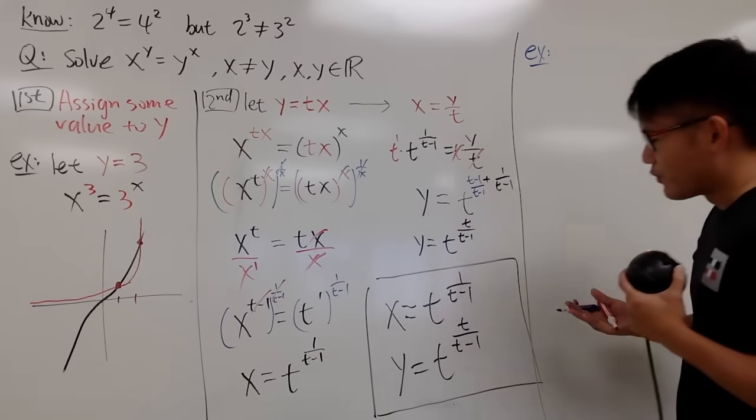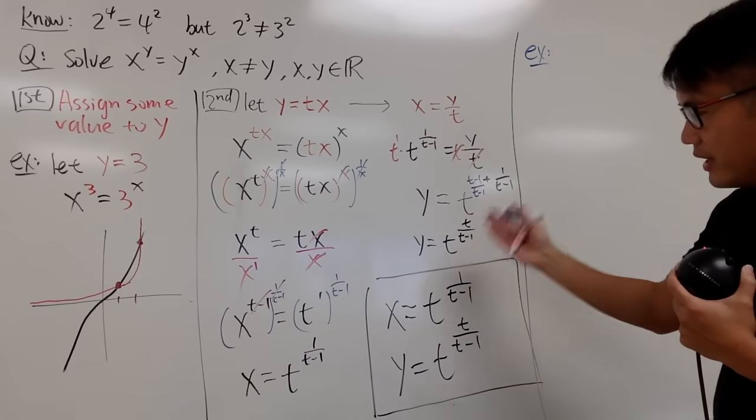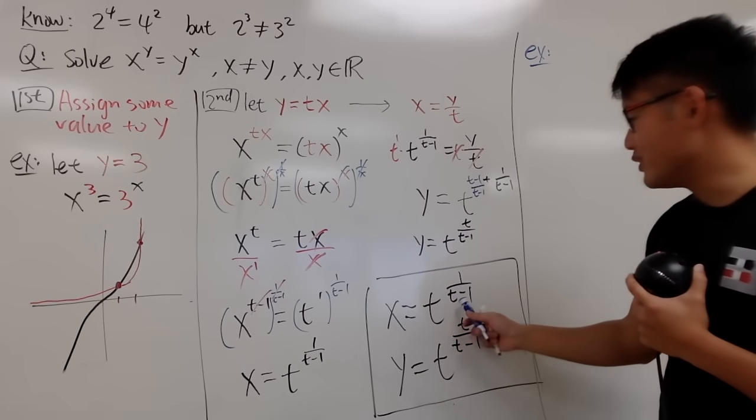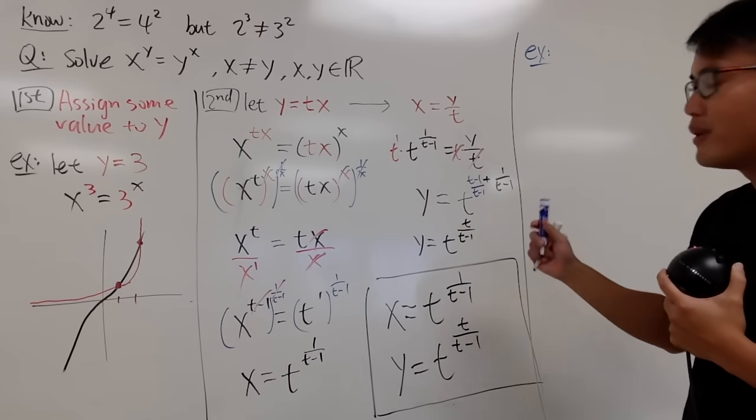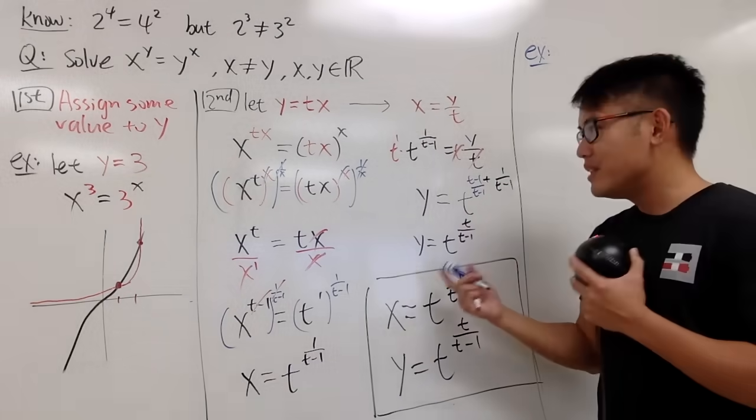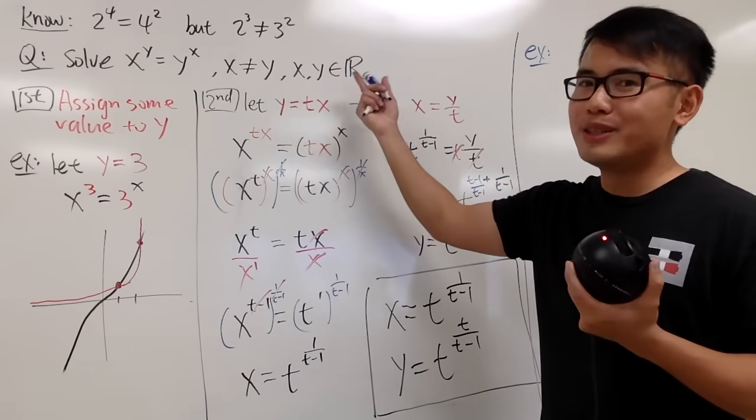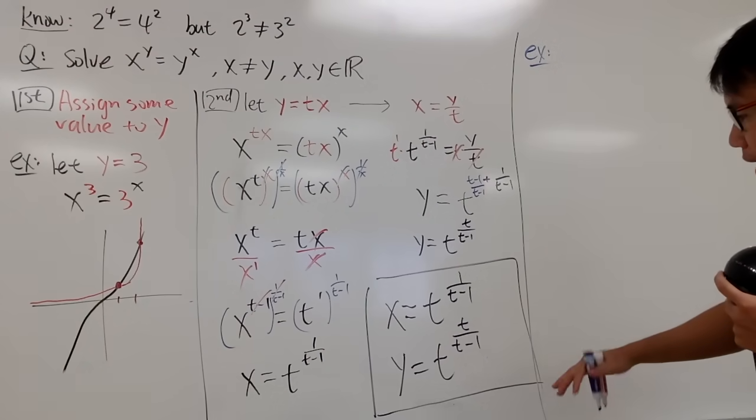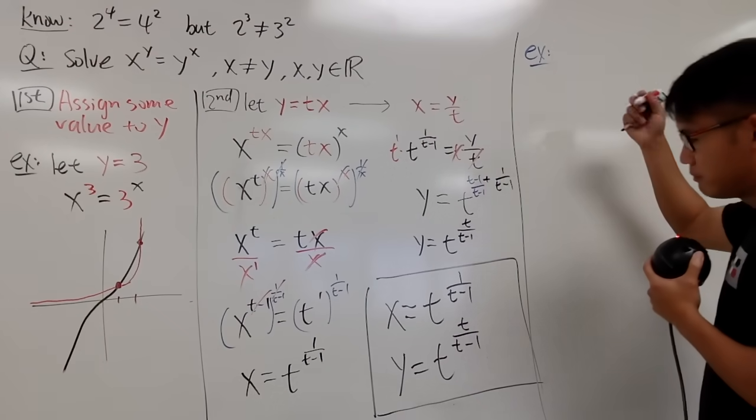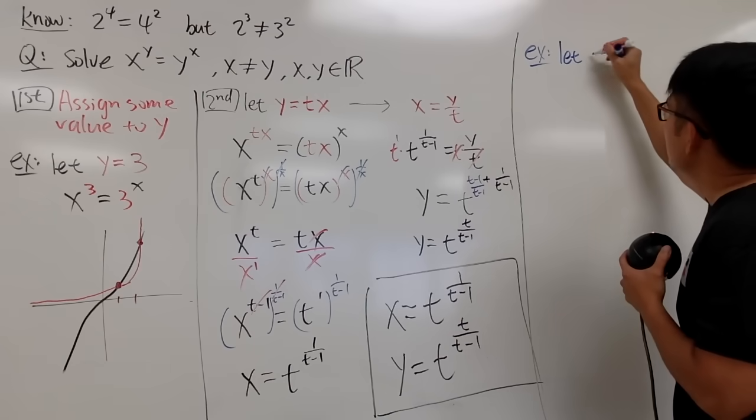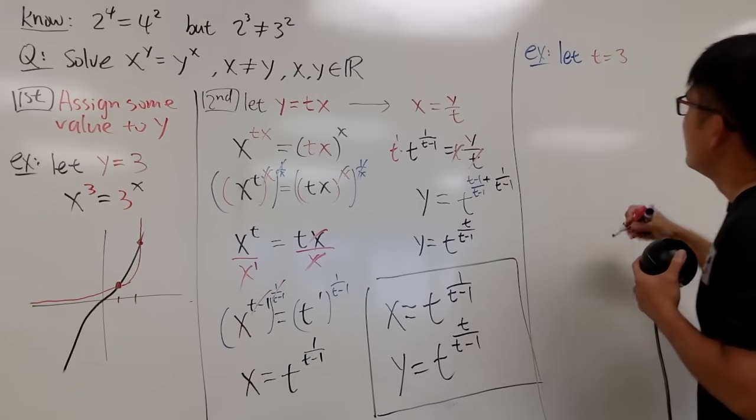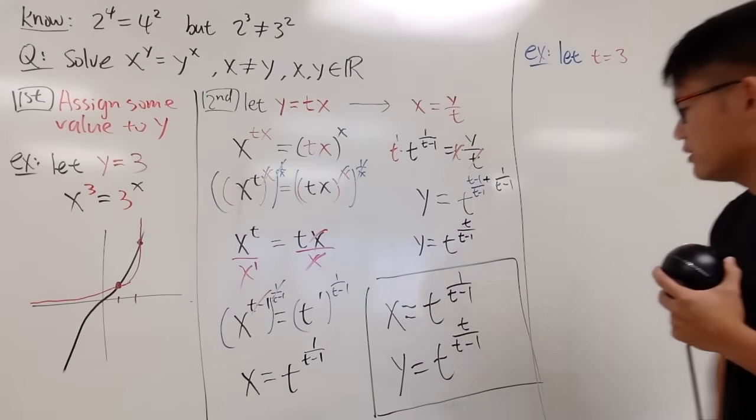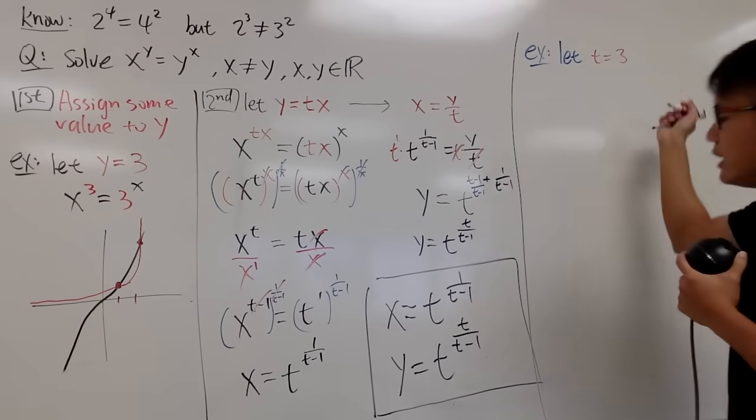But for now, let me just work out an example for you guys right here. As long as you pick a good value for t, then you can get x and y. First of all, t cannot be equal to 1. Otherwise, you will be divided by 0 in the power right here. So that's no good. And if t is equal to 1, you are saying y is equal to x. Seriously, that's redundant. So we are not going to worry about that. But let's pick some, let's say, let t equal to 3. And you can actually pick fractions if you would like and just work that out. But let me just work out a whole number for you guys.